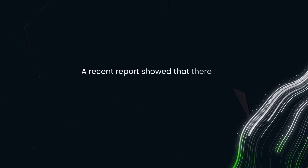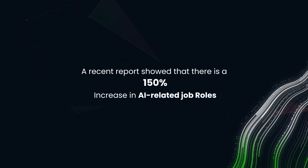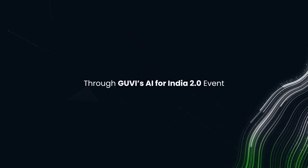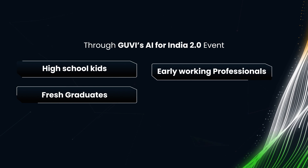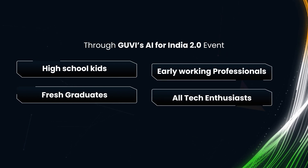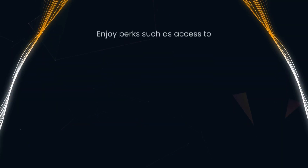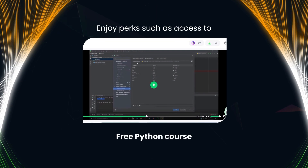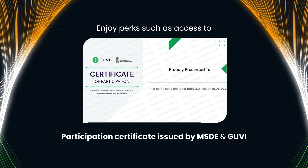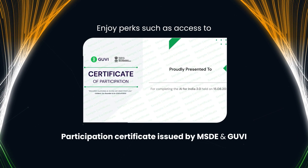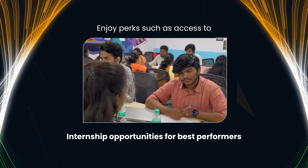A recent report showed that there is a 150% increase in AI-related job roles. Through Guvi's AI for India 2.0 event, high school kids, fresh graduates, early working professionals, and all tech enthusiasts can educate themselves on the foundations of AI and enjoy perks such as access to a free Python course and Guvi certification, participation certification issued by MSDE and Guvi, and internship opportunities for best performers.